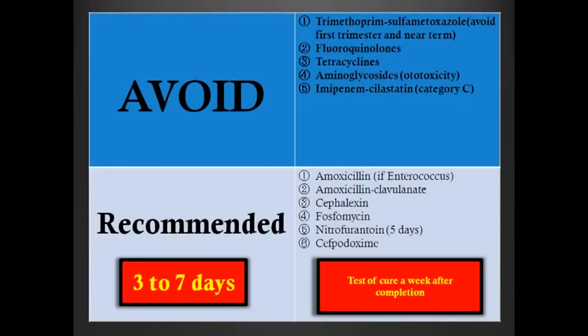Regarding pregnancy, these are the agents to avoid. Bactrim is FDA class C for pregnancy — avoid it in the first trimester because it is a folate antagonist and can cause neural tube defects, and near term because it can cause kernicterus by interacting with indirect bilirubin in the newborn. Fluoroquinolones are totally contraindicated in pregnant women due to concerns about effects on bone and cartilage. Tetracycline is also contraindicated. Aminoglycosides should not be used unless totally necessary, due to concerns for ototoxicity and nephrotoxicity. Imipenem-cilastatin is category C — not meropenem or ertapenem.